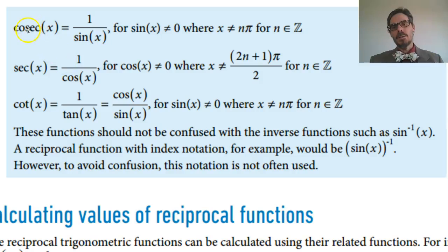How do you remember cosec, sec and cot? I look at the third letter of each one. Cosec is 1 over sine. Sec is 1 over cos. And cot is 1 over tan.